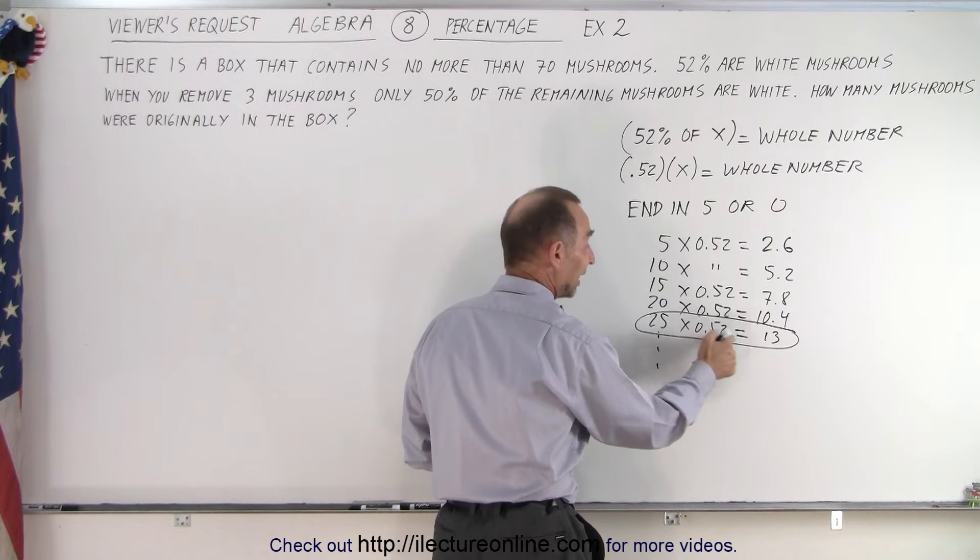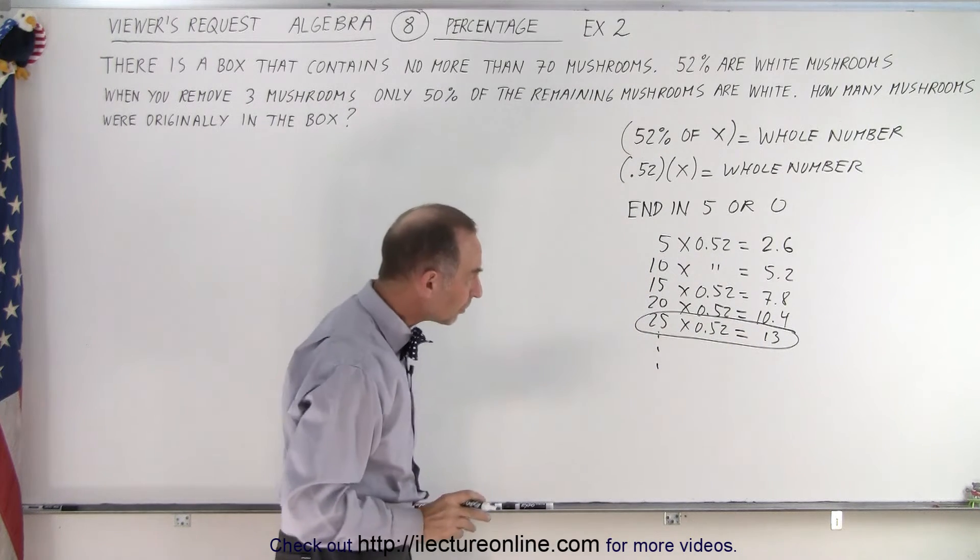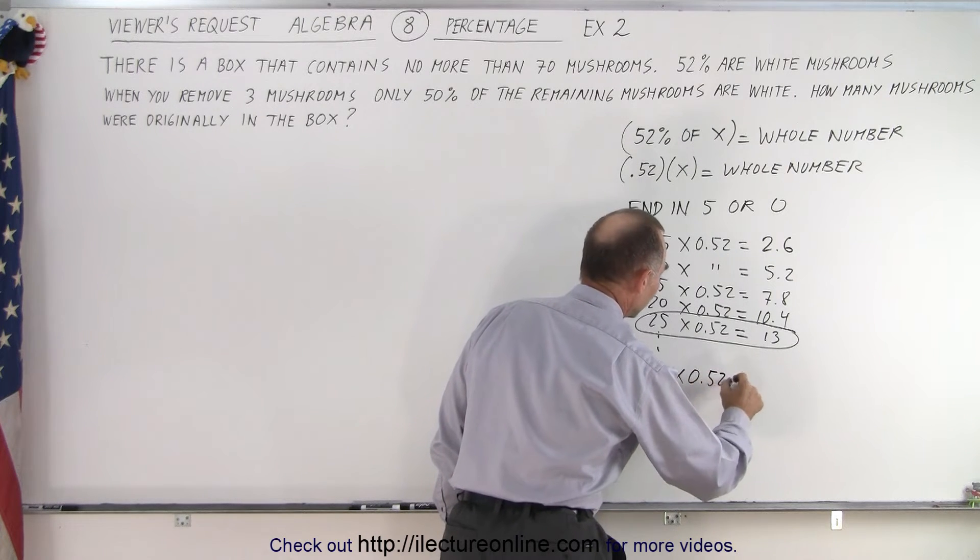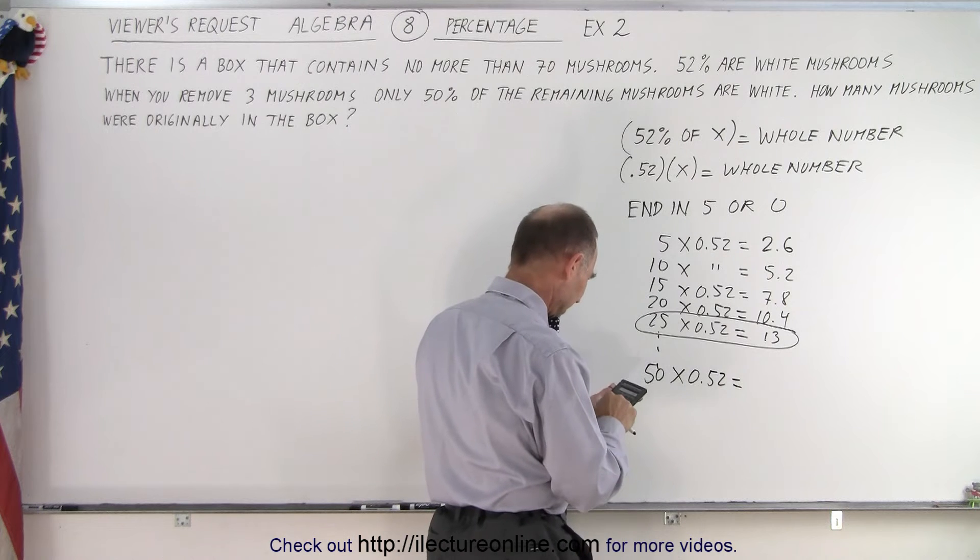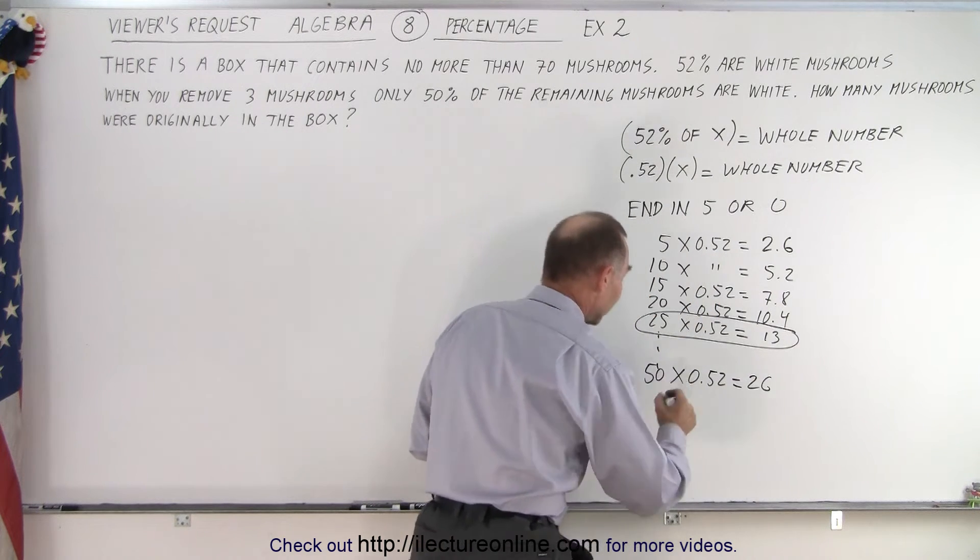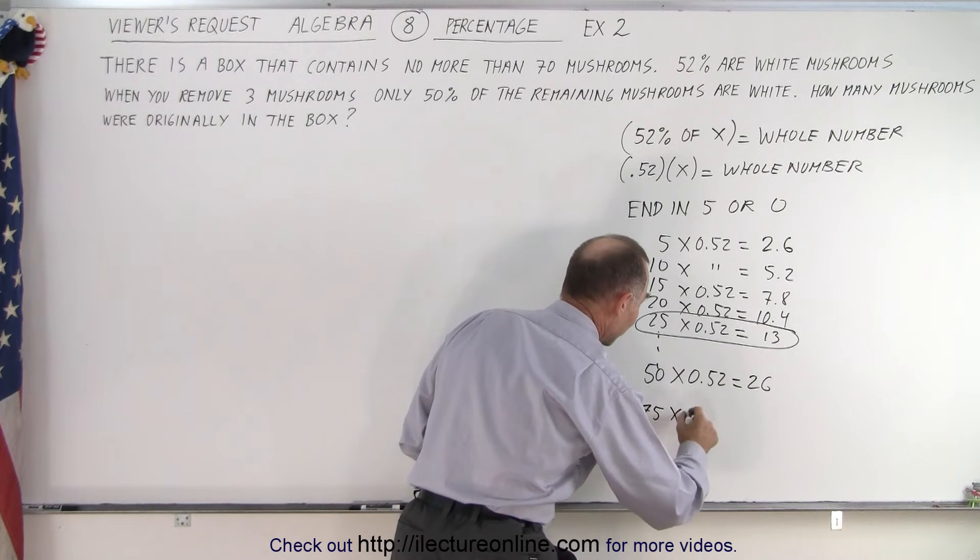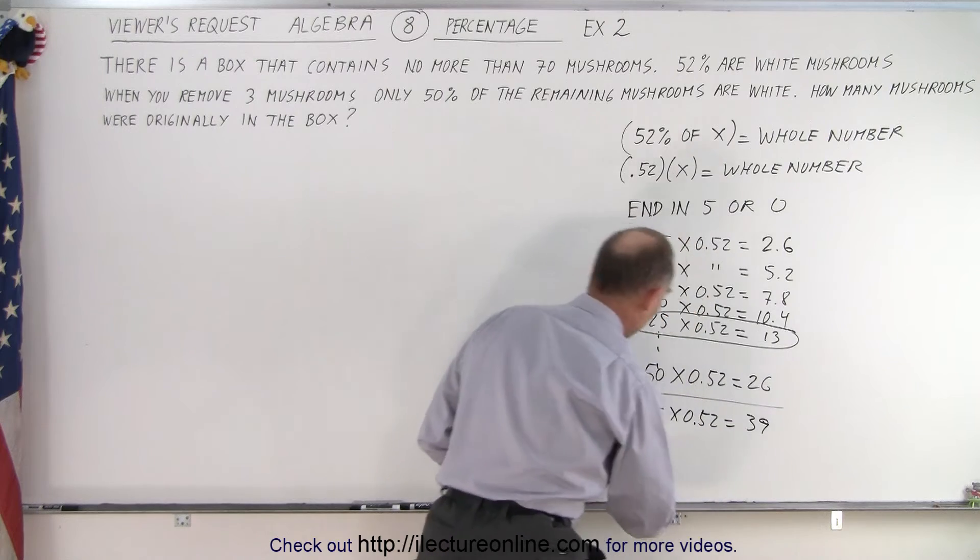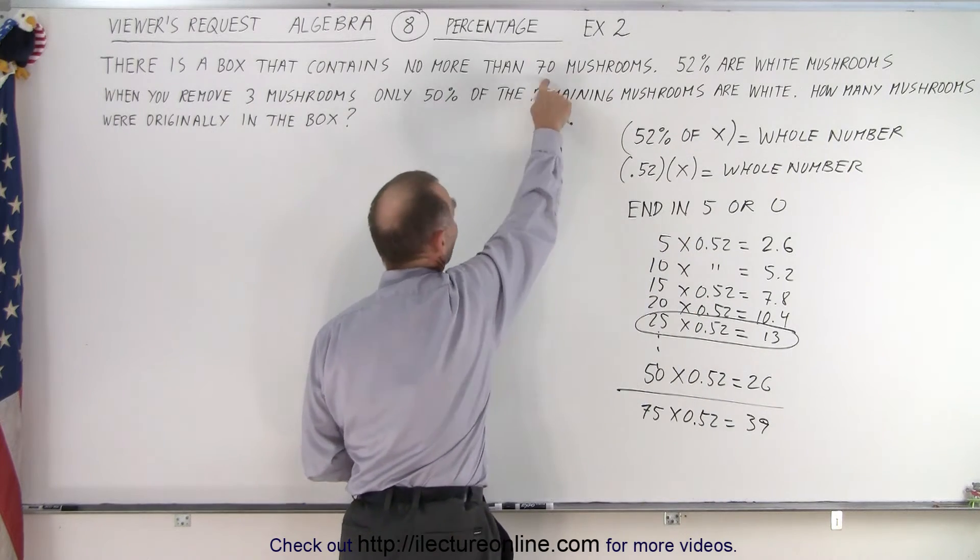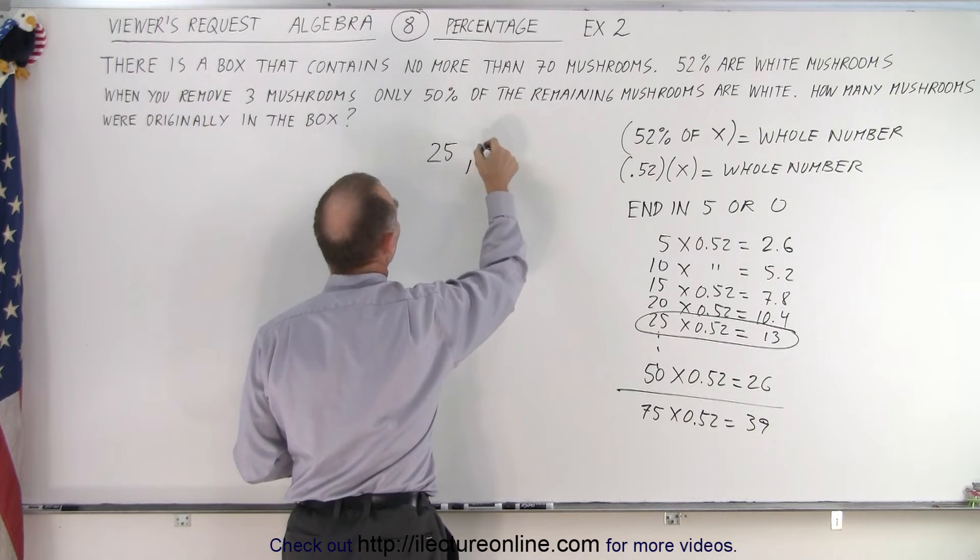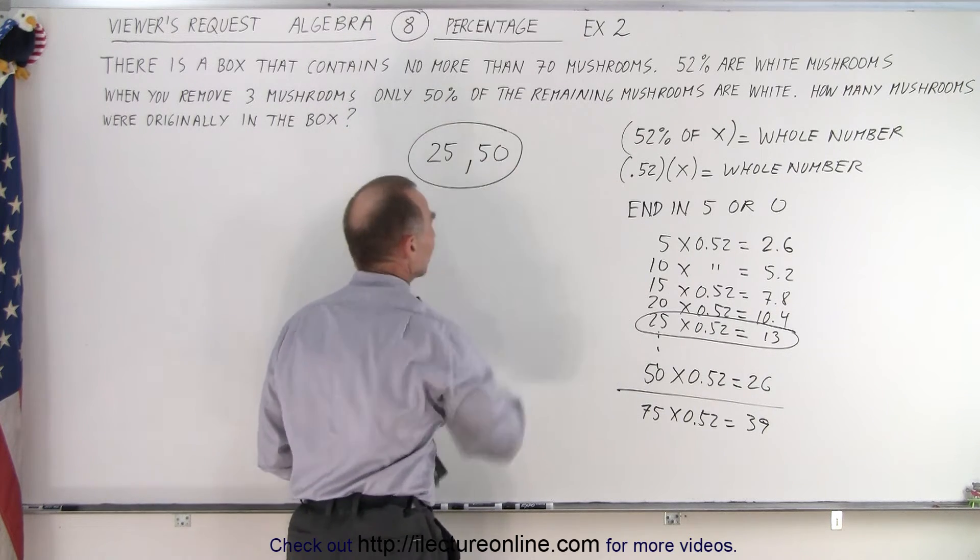So here it is, so the smallest number of mushrooms I can have is such that if I take 52% of it I get a whole number. Of course it could be twice that many because 50 times 0.52, that gives me 26. The next one would be 75 times 0.52, that gives me 39, but that's already too big of a number because it's no more than 70. So the only two possibilities are 25 and 50. Those are the only two possibilities now.